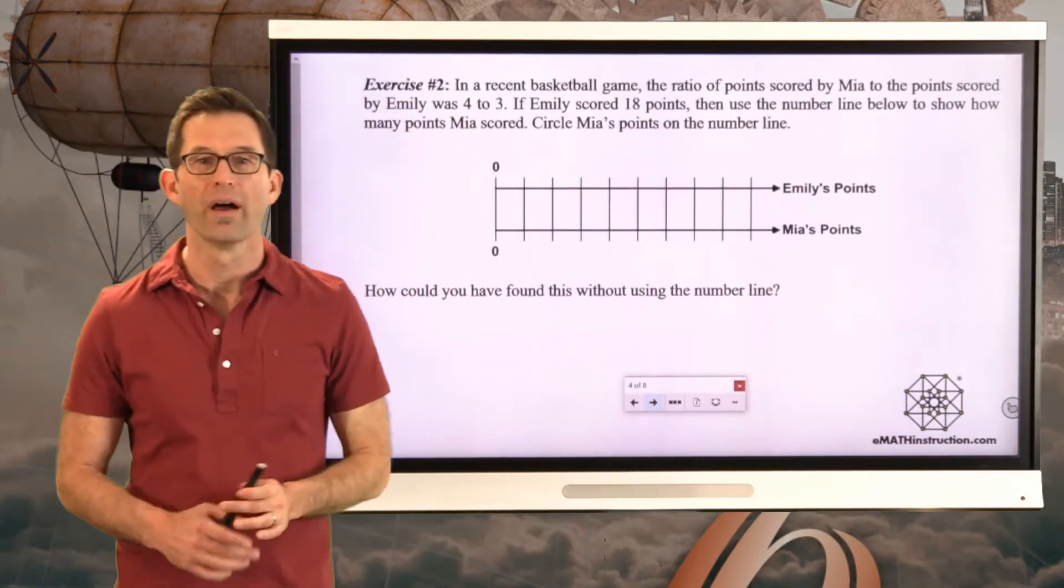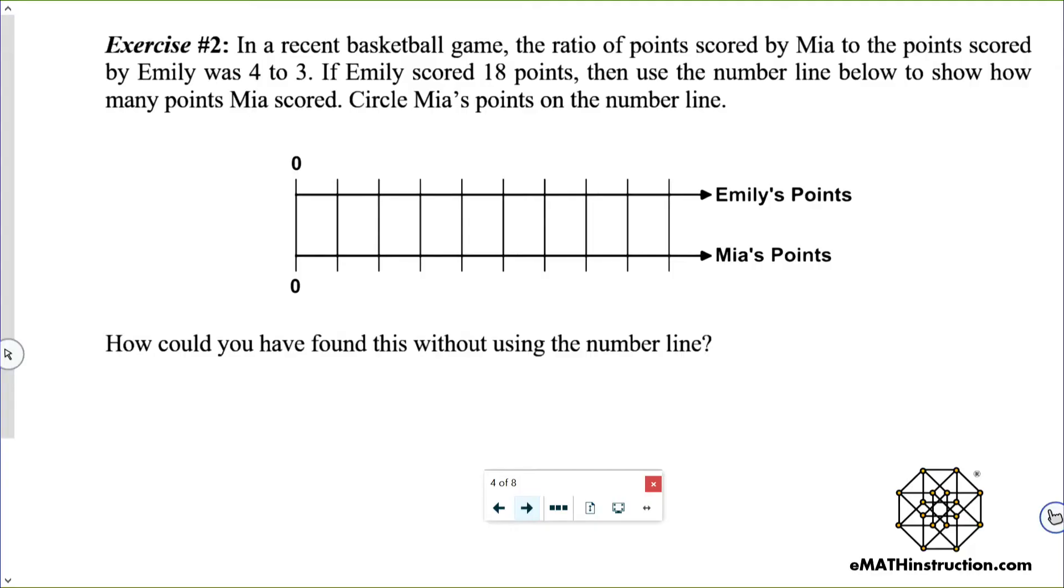Another double number line. Exercise number two. In a recent basketball game, the ratio of points scored by Mia to the ratio to the points scored by Emily was 4 to 3. If Emily scored 18 points, then use the number line below to show how many points Mia scored. Circle Mia's points on the number line.